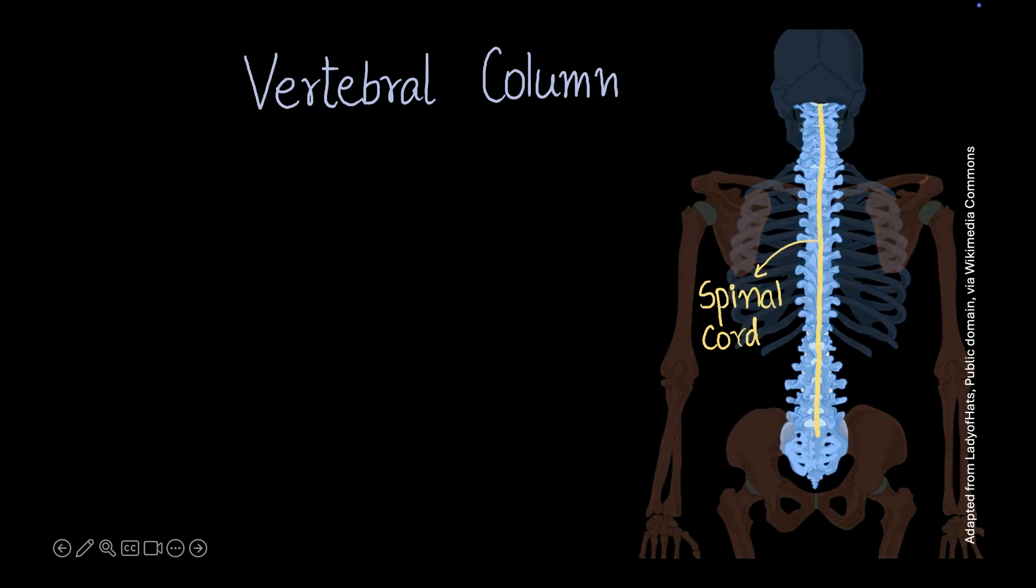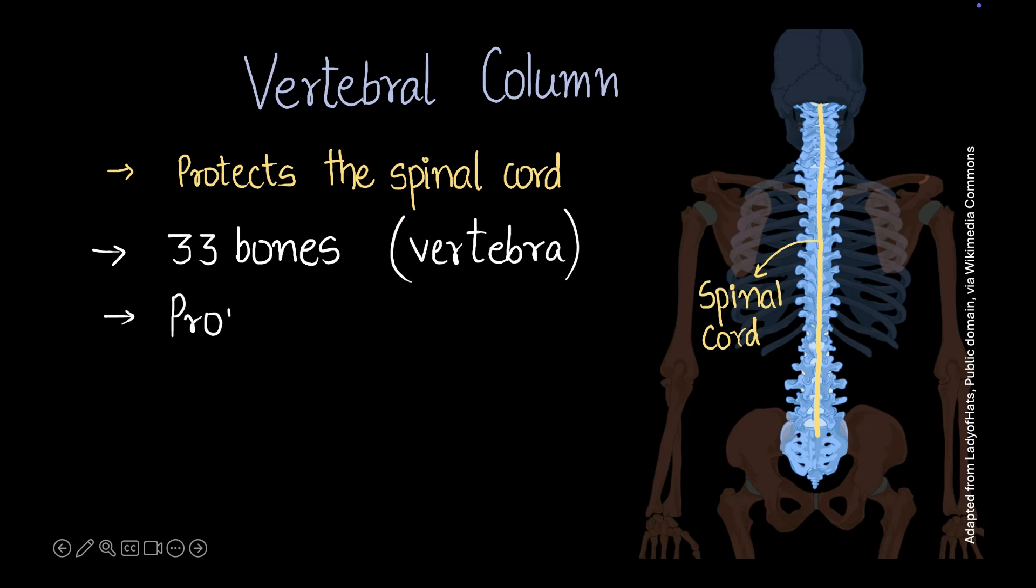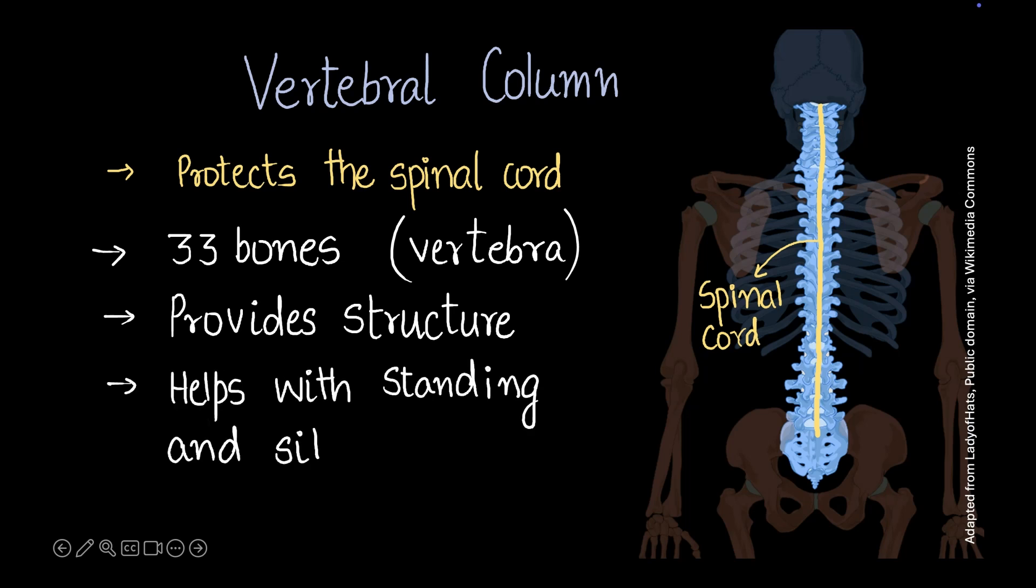This is enclosed by a set of bones that protect it, and that set of bones is the vertebral column. This is the vertebral column which is used to protect the spinal cord. This is a set of 33 bones, and each of those bones are called vertebra. These bones provide structure as well to the body. One cannot stand or sit without the backbone. Imagine standing up without your backbone would be impossible. It helps us with standing and sitting.